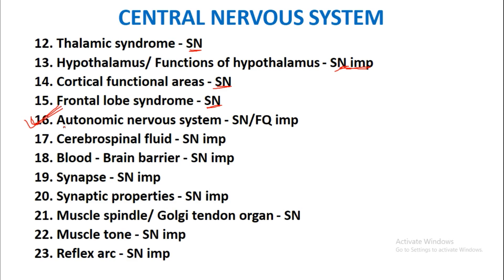You must know about the autonomic nervous system — sympathetic and parasympathetic nervous system. Cerebrospinal fluid will be asked as a short note and is an important short note. Blood-brain barrier or blood-CSF barrier will be asked as a short note and is also an important short note. Synapse will be asked as a short note and is also an important short note.